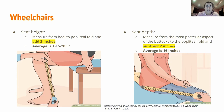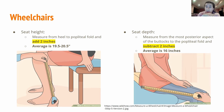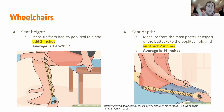Starting with seat height: you measure from the heel or the floor to the popliteal fold, then add two inches. This ensures the patient is off the floor and their feet aren't dragging. One exception is the hemi wheelchair, used by people who need to use the floor to propel themselves — in that case you wouldn't add two inches. The average seat height for a standard adult is between 19.5 and 20.5 inches.